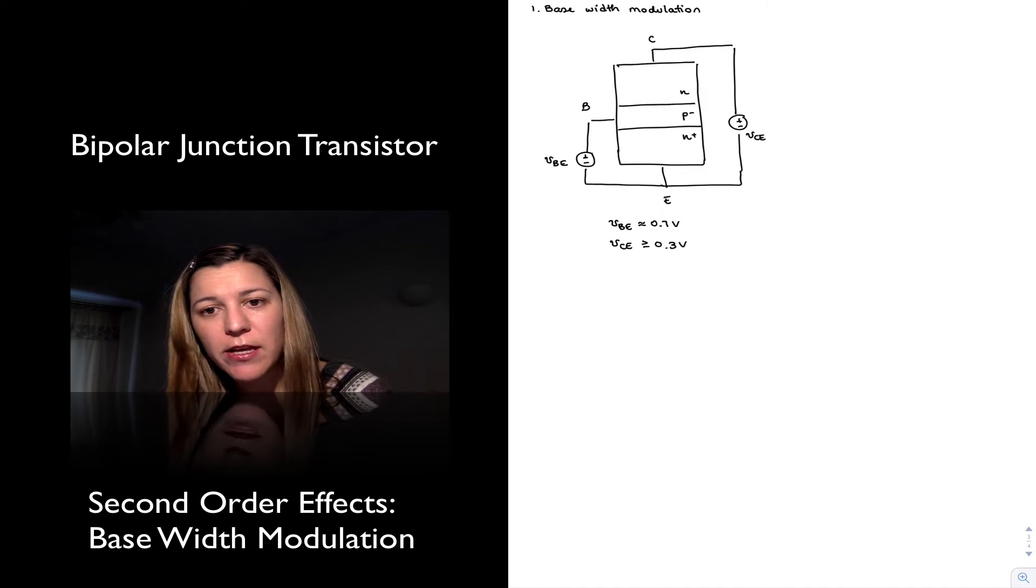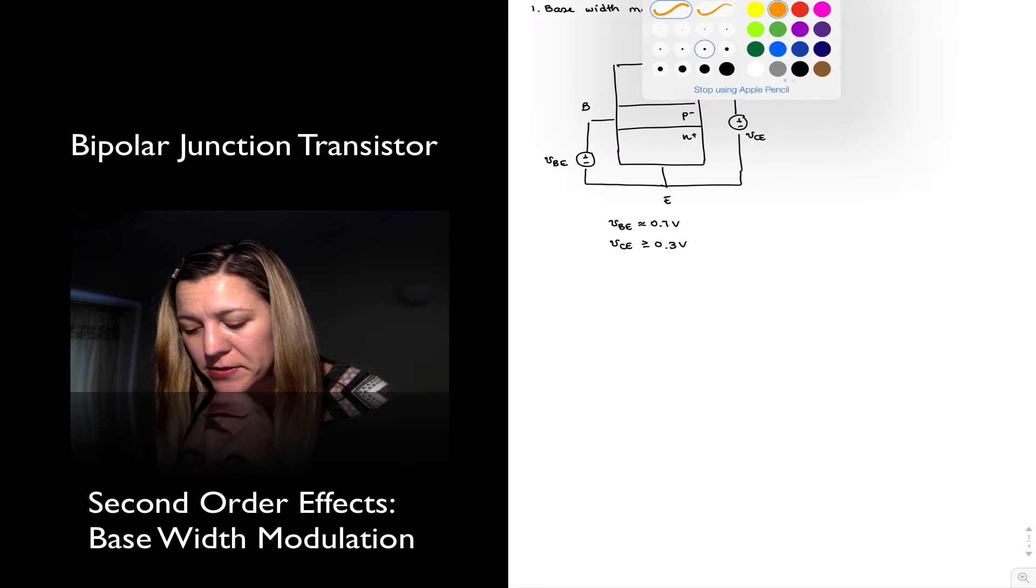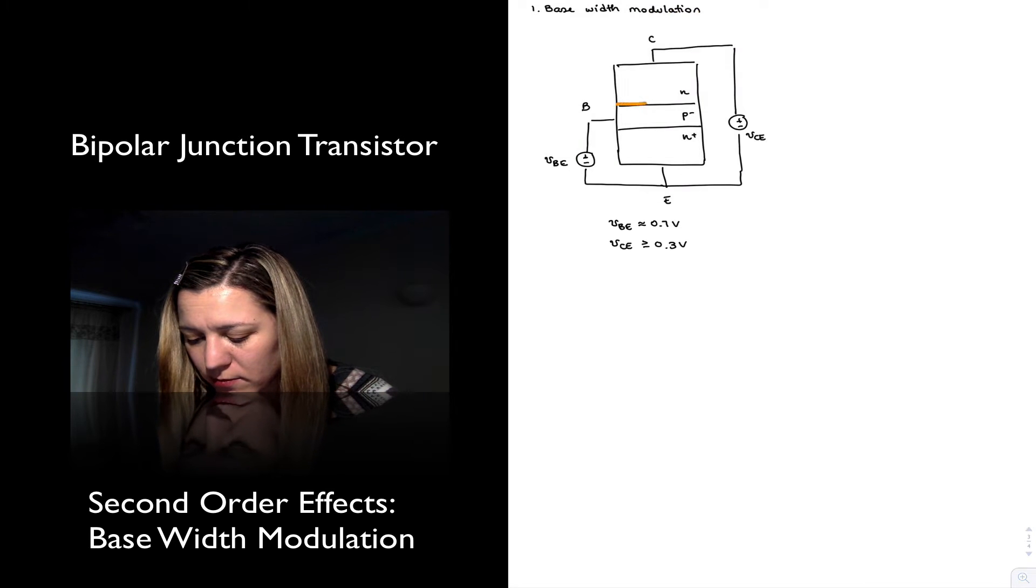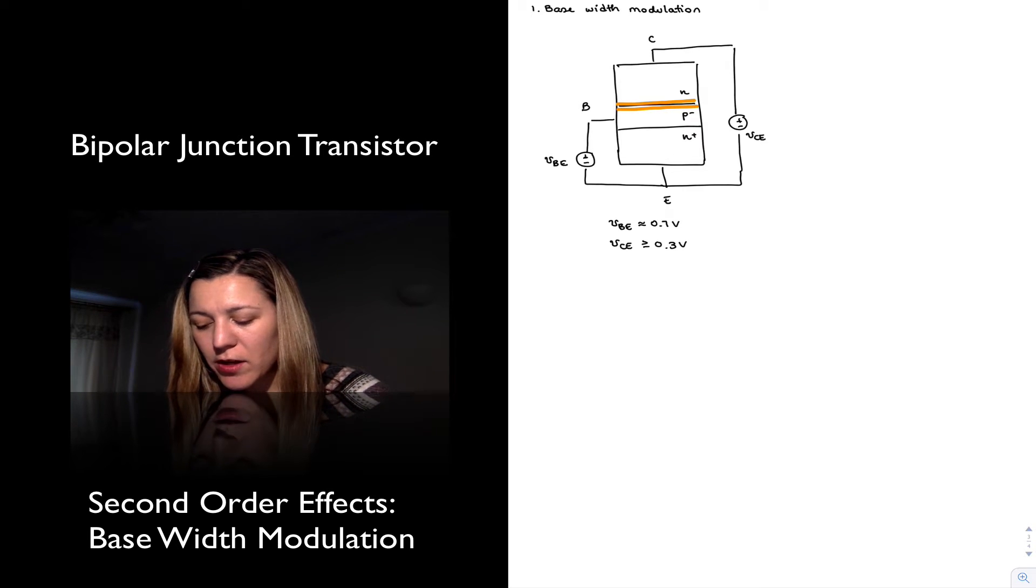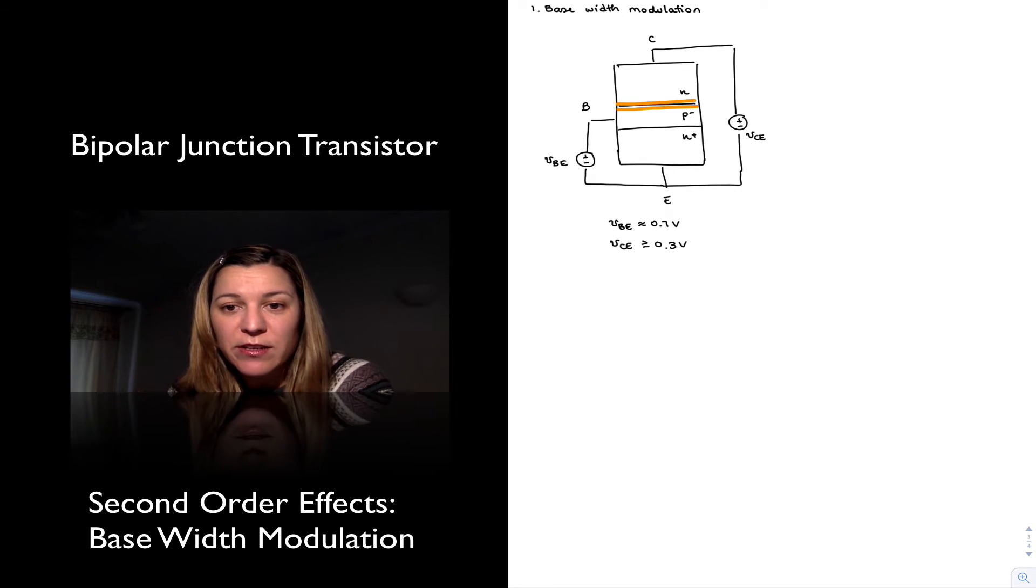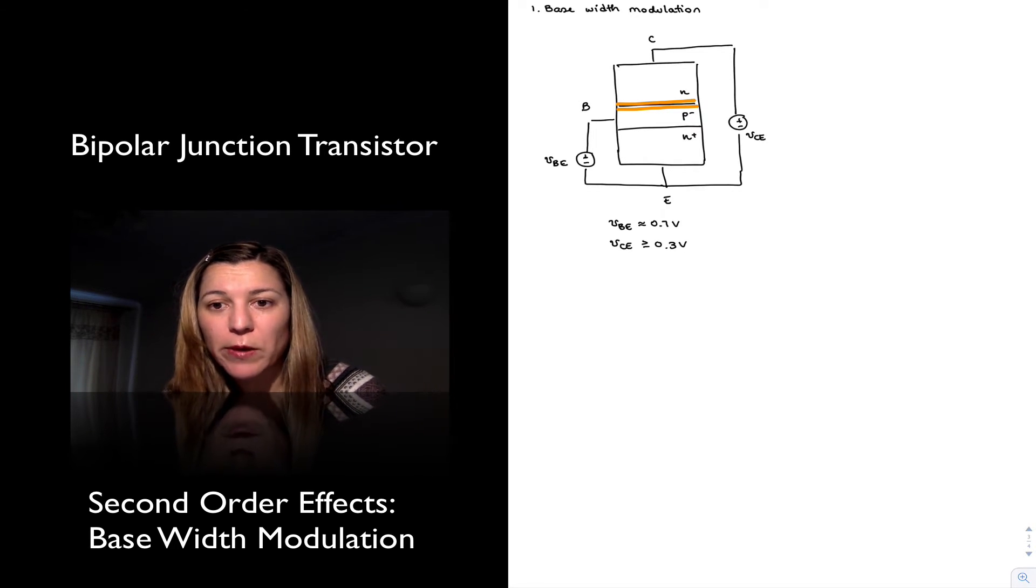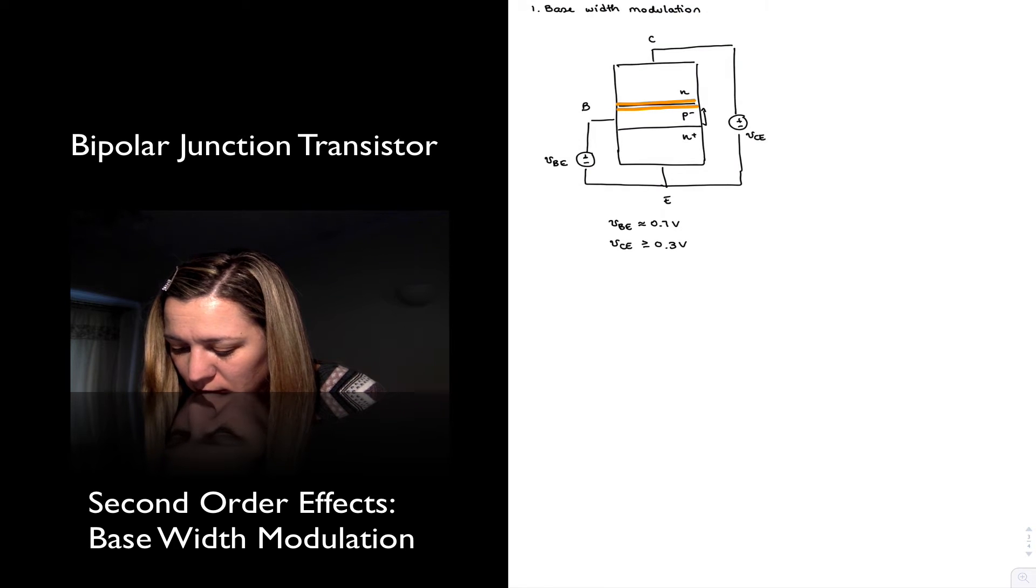And so what that implies is if we apply a collector-emitter voltage, we are going to have a depletion region extending both into the collector and into the base. And what that leaves us with is a base which has an effective width that is different from the actual physical width. The effective width, meaning the area where electrons coming from the emitter can recombine, is smaller than the physical width because there's no recombination going on in the depletion region. It's depleted of mobile charge. And so we have, in this case, as you can see, this will be the effective width of the base.